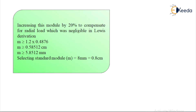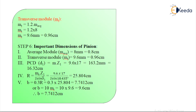Increasing this module by 20% to compensate for radial load neglected in Lewis's derivation: M ≥ 1.2 × 0.4876 = 5.8512 mm. Selecting the standard module as 8 mm (0.8 cm). The transverse module MT = 1.2 × M_average = 1.2 × 8 = 9.6 mm (0.96 cm).